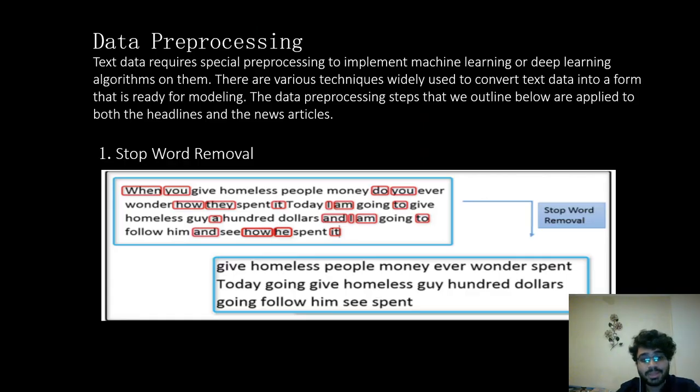Text data requires pre-processing to implement machine learning or deep learning algorithms. There are various techniques widely used to convert text data into a form ready for modeling. We first start by removing stop words from the text data. Stop words are most common words in a language which do not provide much context. These words can be any conjunctions or prepositions like and, to, but, from, etc. These words need to be filtered out so they don't harm the processing time.